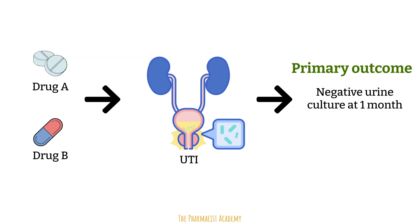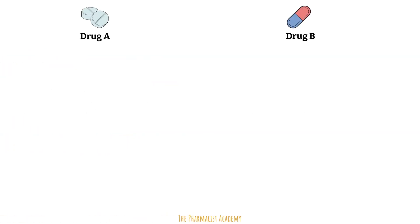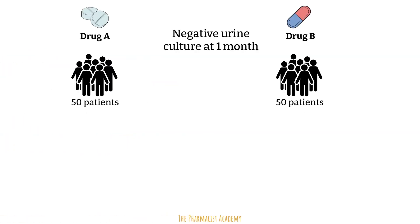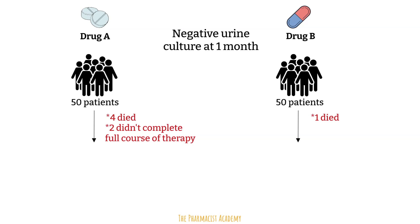Through initial randomization, 50 patients were assigned to drug A and 50 to drug B. During the study, 4 patients died in the drug A group and 1 in the drug B group. 2 patients in the drug A group only completed 1 week of therapy instead of 4 weeks, and 5 patients in the drug B group also did not complete the full 4 weeks of therapy.